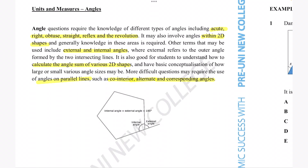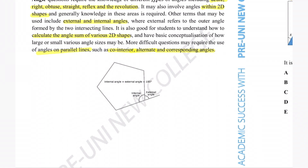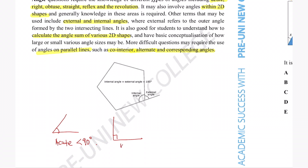Acute angles are any angles that are less than 90 degrees. It's often easy to remember that acute angles are the smallest type of angle because the letter A kind of looks like the acute angle. The next angle is the right angle — right angles are exactly 90 degrees and are usually represented with a little square instead of a curve.